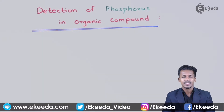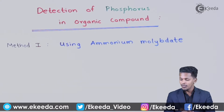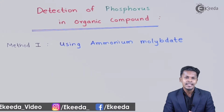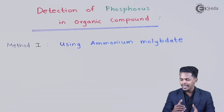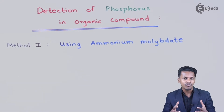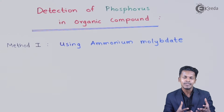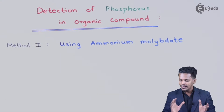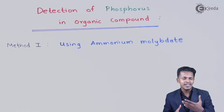Let me talk about those two methods. The first method uses ammonium molybdate. Ammonium molybdate helps us determine the presence of phosphorus in the organic compound through particular steps, producing a specific product from which we can estimate the percentage of phosphorus. This first method requires multiple step reactions.